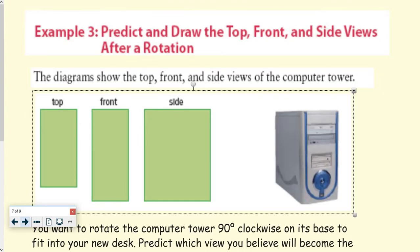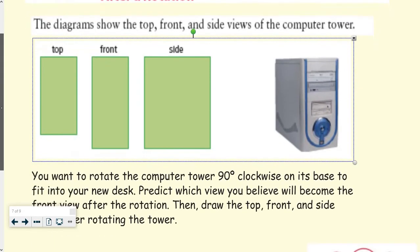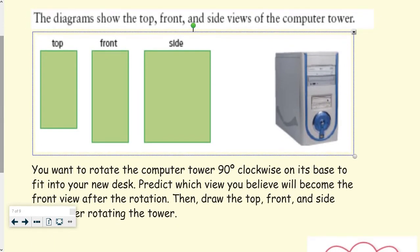That's what it would look like as a 3D object. So example three, predict and draw the front, top, and side views after a rotation. So the rotation is the tricky part. The diagrams show the top, front, and side views of the computer tower. So if this is the top, that's the top. The side view is really big here.